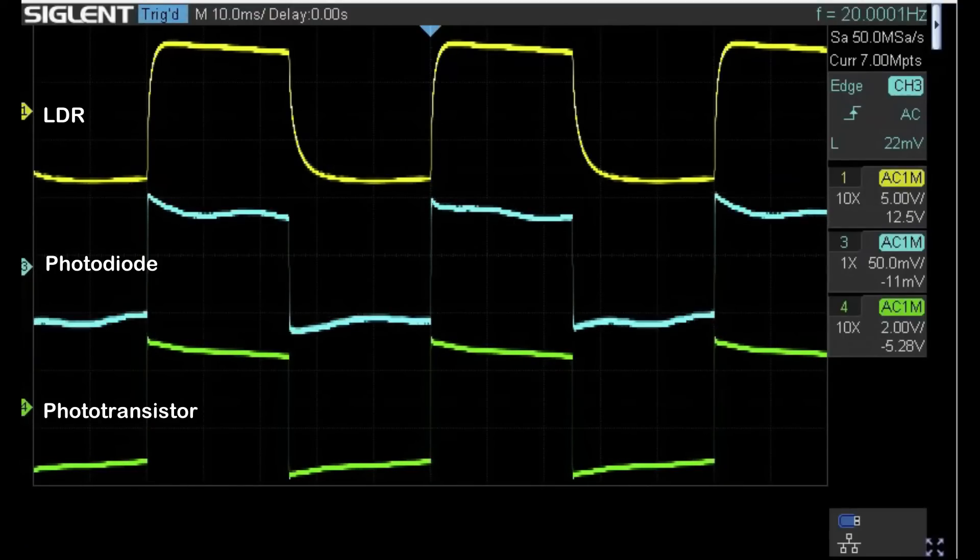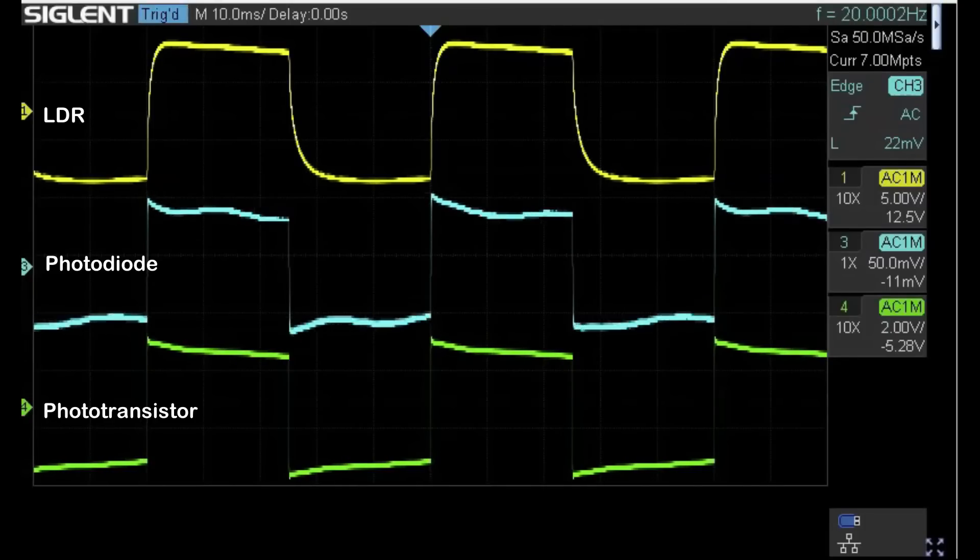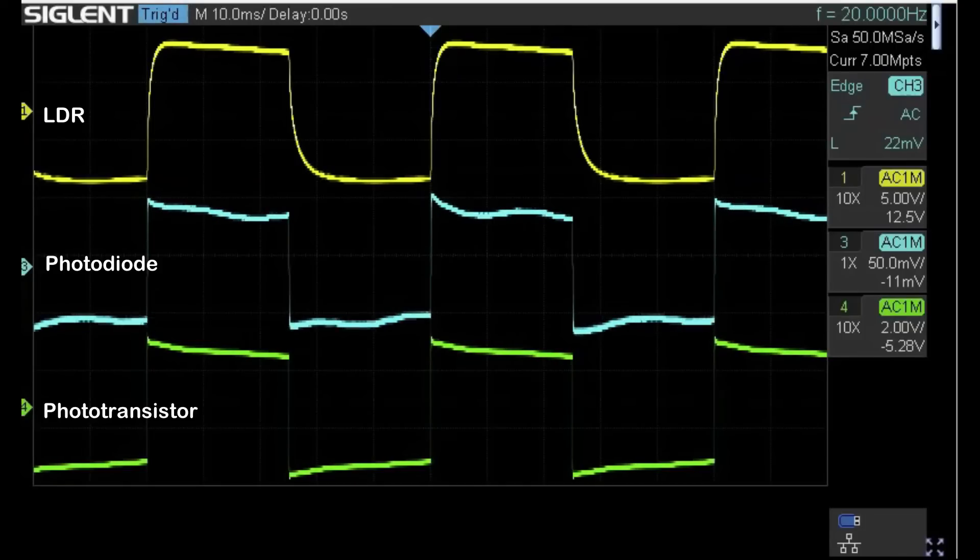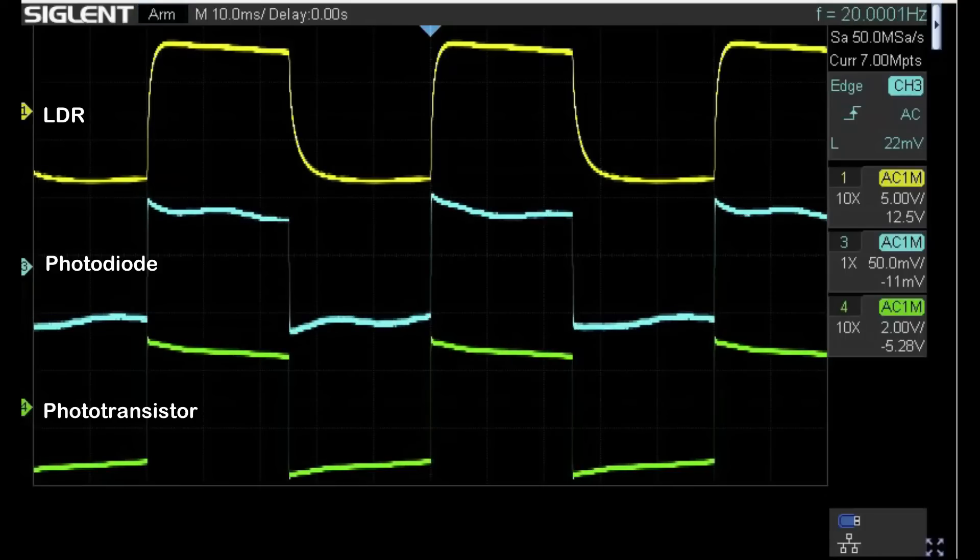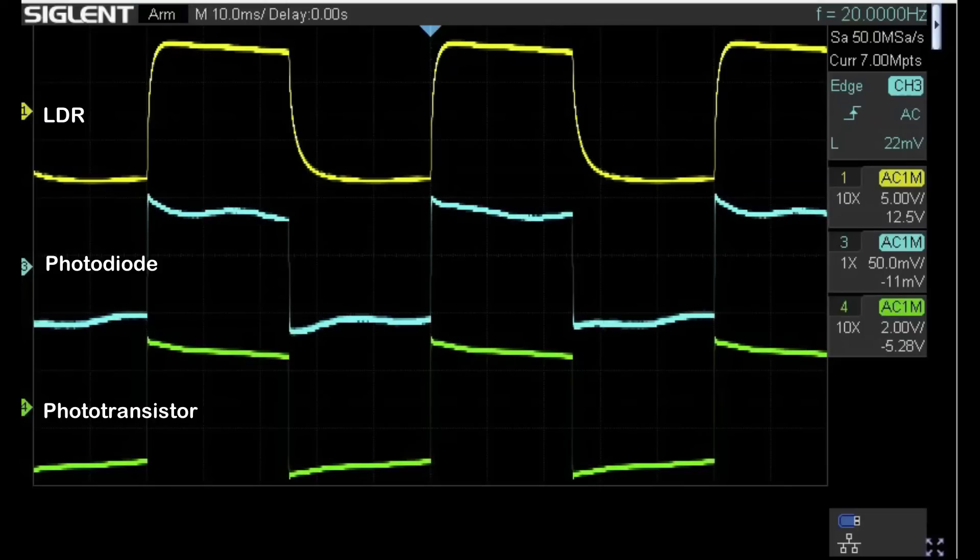As a reminder, on the display trace you've got yellow which is the light dependent resistor, blue is what I believe to be a photodiode, and green is the infrared phototransistor. They're all being driven by the same channel of the signal generator.